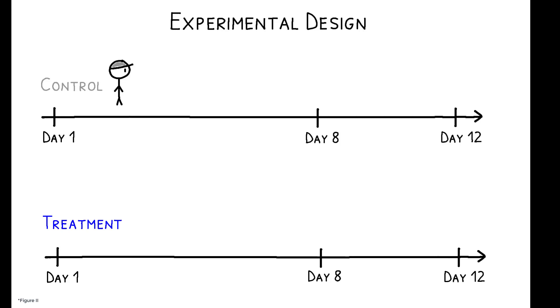While control workers received their accrued earnings in a single payment at the end of the contract period, treatment workers received their earnings in two installments – an interim payment of their earnings to date at the end of day 8, and a final payment on day 12.